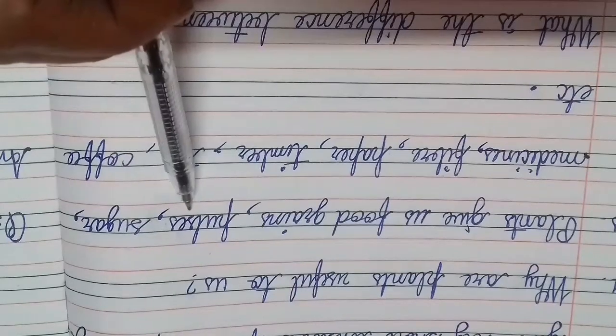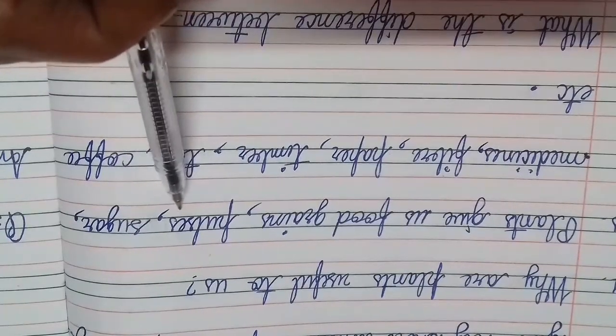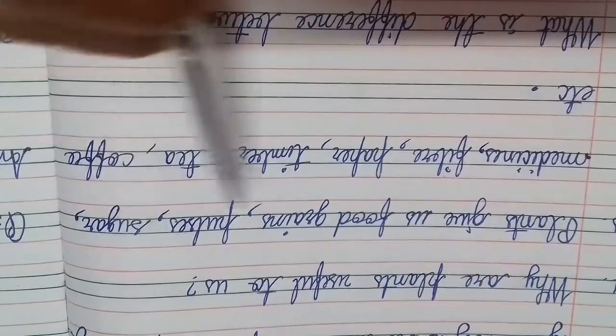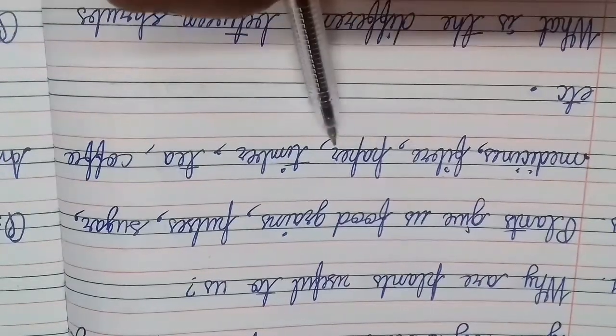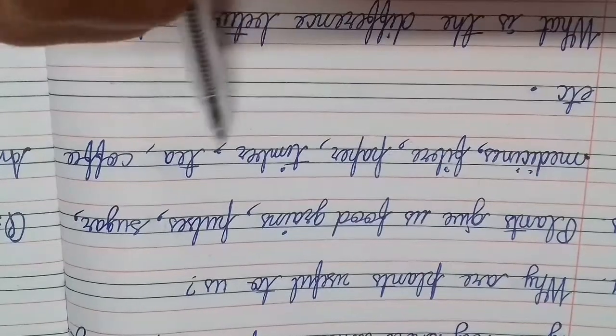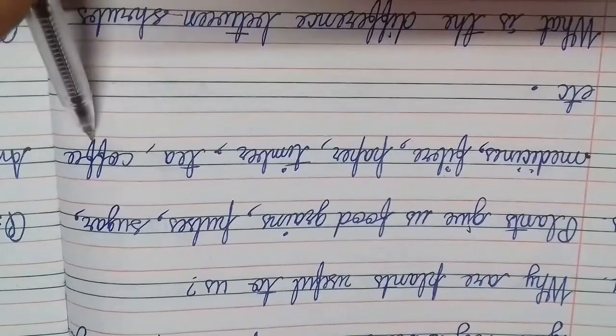Pulses like urad, moong, masoor; sugar, medicines, fiber, paper, timber, tea, coffee, etc.